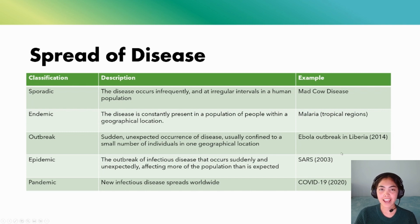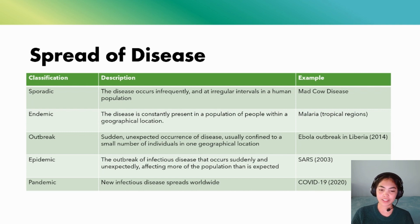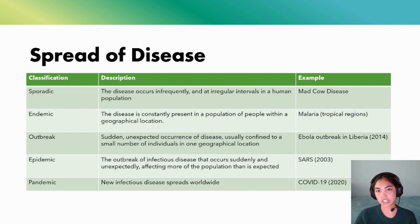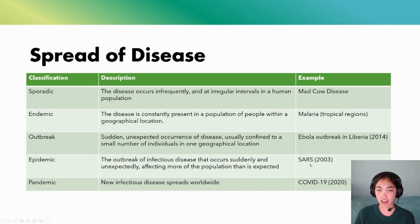An epidemic is an outbreak of an infectious disease that occurs suddenly and unexpectedly in a population that is a bit larger than what was initially expected. An example is the SARS virus that came out in 2003, which belongs to the same family as the COVID-19 virus.